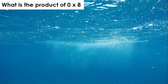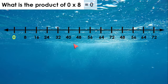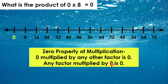What is the product of 0 times 8? If we're using a number line and we're skip counting by 8, we know that 0 groups or no groups of 8 means 0. We also know that the zero property of multiplication tells us that 0 multiplied by any other factor or number is 0. Any factor multiplied by 0 is 0. For example, 0 times 8 equals 0, and 8 times 0 equals 0.